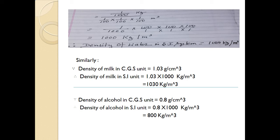Similarly we can take examples of other liquids or solids. For example, density of milk in CGS unit is 1.03 gram per centimeter cube. To convert into SI unit (kg per meter cube), you just multiply by 1000. If the question asks you to convert from kg per meter cube to gram per centimeter cube, then you divide by 1000. Second example: density of alcohol in CGS unit is 0.8 gram per centimeter cube, so density of alcohol in SI unit is 0.8 × 1000 = 800 kg per meter cube.